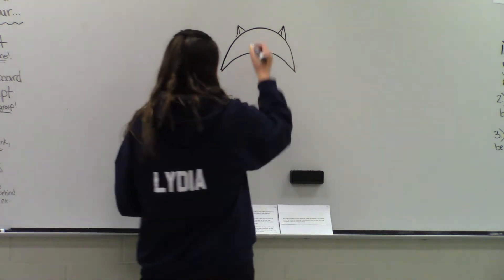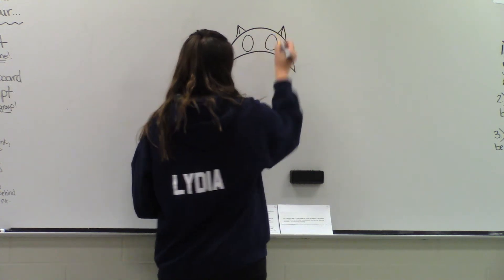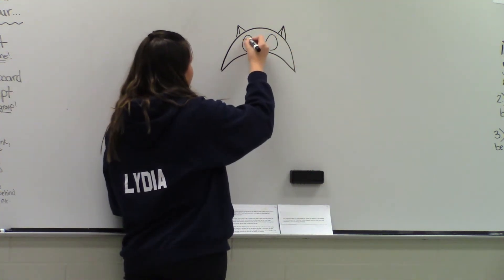For the eyes, draw two ovals in the open space and one smile line on the top of the eye.